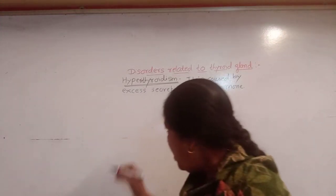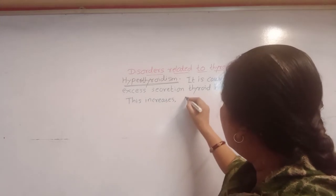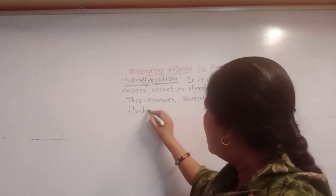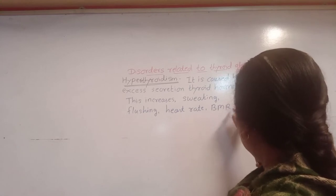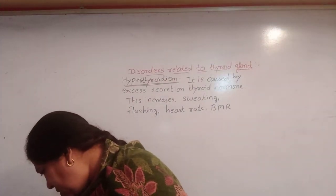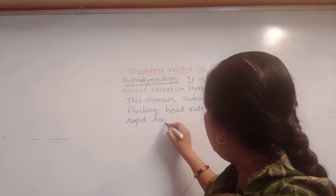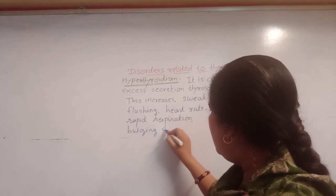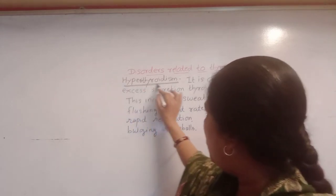Hyperthyroidism increases sweating, flushing, and heart rate. It also increases BMR — that is, basal metabolic rate — and results in rapid respiration. Another effect is bulging of the eyeballs, which occurs due to the deposition of fat behind the eyeballs. These are the main effects of hyperthyroidism.